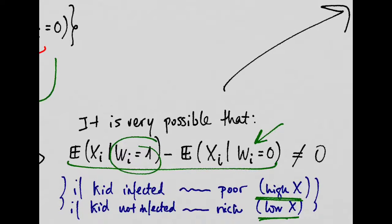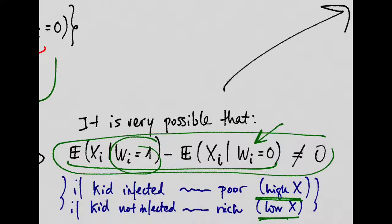And of course, that would make this thing not equal to 0. Because this would be high, and this would be low, and that would be a positive number.